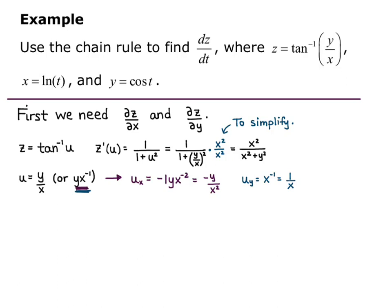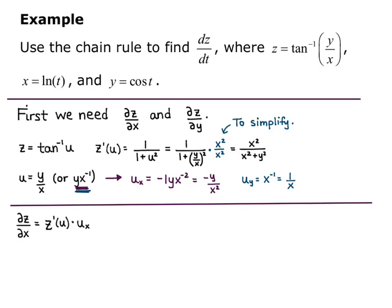So, ∂z/∂x equals z prime of u times u sub x — this is just the Calc 1 chain rule idea. So ∂z/∂x equals x squared over (x squared plus y squared) times negative y over x squared. Notice that the x squared factor in the numerator and denominator cancel, so we have negative y over (x squared plus y squared).